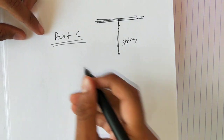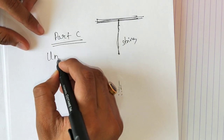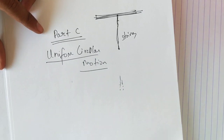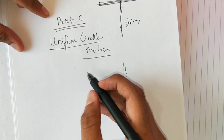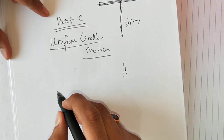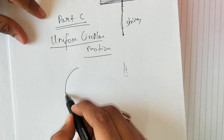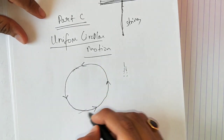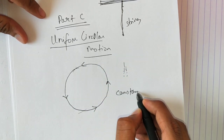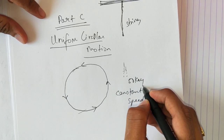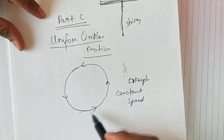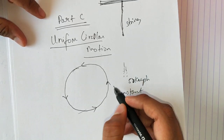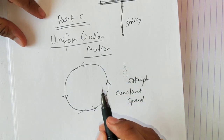Now we'll start with Part C: uniform circular motion. What is uniform circular motion? When an object is moving with a constant speed in a circular path — for example, if a car is moving in a circular direction continuously with a constant speed of 50 km/h — it is said to be in uniform circular motion. One thing you have to understand: when an object is in uniform circular motion, it is constantly changing its direction.